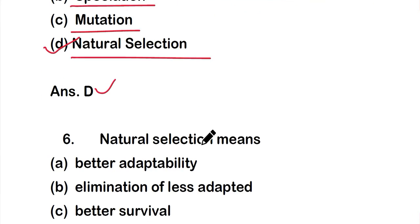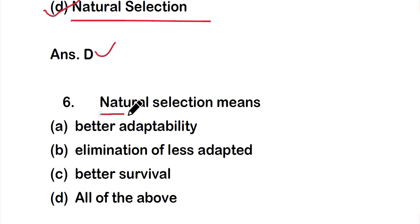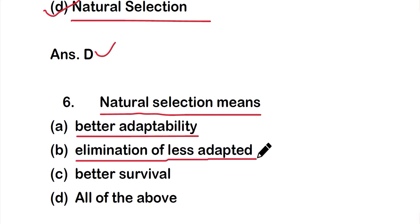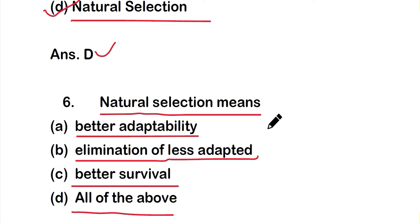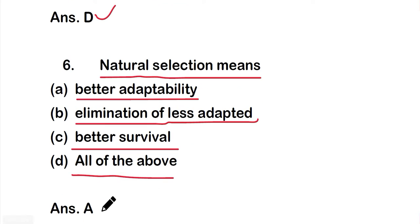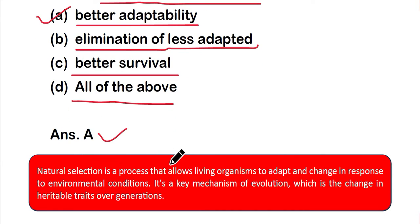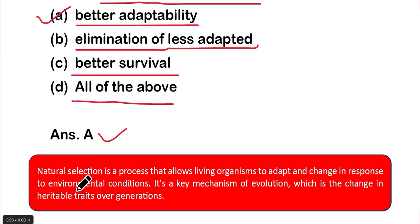Question 6: Natural selection means — option A: better adaptability, option B: elimination of less adapted, option C: better survival, or option D: all of the above. The correct answer is option A — better adaptability. Natural selection is a process that allows living organisms to adapt and change in response to environmental conditions. It is a key mechanism of evolution — the change in heritable traits over generations.